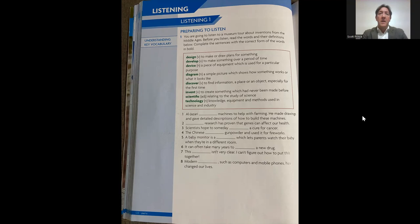Number five: A baby monitor is a device which lets parents watch their baby when they are in a different room. Number six: It can often take many years to develop a new drug. Number seven: This diagram isn't very clear. I can't figure out how to put this together. And number eight: Modern technology such as computers and mobile phones has changed our lives. So that's the vocabulary related to listening one.